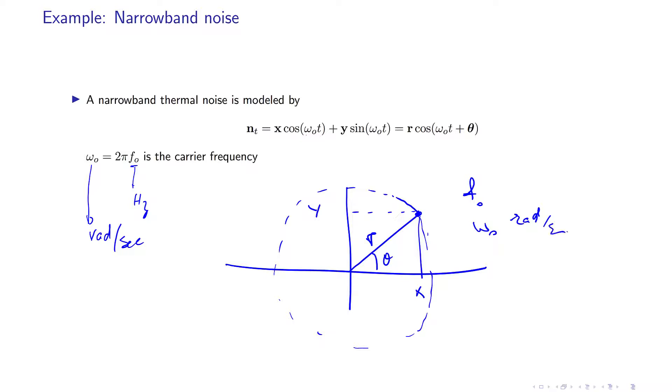So suppose that this point is rotating. At time t equals zero it is here, and at an arbitrary time t it is here.